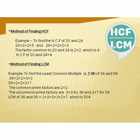First we will discuss HCF — highest common factor. How to find the HCF of 20 and 24. Express 20 as a product of primes: 2 × 2 × 5. And 24 as 2 × 2 × 2 × 3. The common factor of 20 and 24 is 2 × 2, which is 4. So, HCF of 20 and 24 is 4.